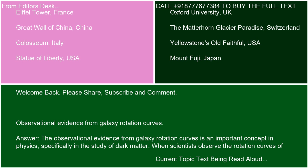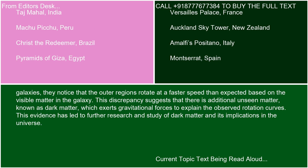The observational evidence from galaxy rotation curves is an important concept in physics, specifically in the study of dark matter. When scientists observe the rotation curves of galaxies, they notice that the outer regions rotate at a faster speed than expected based on the visible matter in the galaxy. This discrepancy suggests that there is additional unseen matter, known as dark matter, which exerts gravitational forces to explain the observed rotation curves.